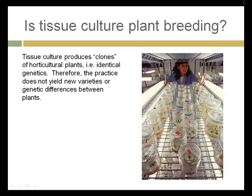The next option is tissue culture. Tissue culture uses clones of horticultural plants — a section of stem, bulb, root, or leaf — to produce identical plants. We're going to talk about this more when we discuss asexual production. Tissue culture produces identical plants and does not yield new varieties or genetic differences between plants. Therefore, it's not plant breeding; it's plant propagation, but not plant breeding.